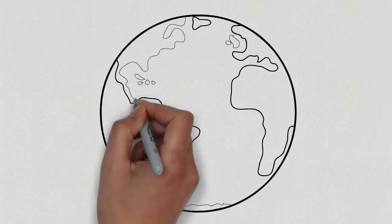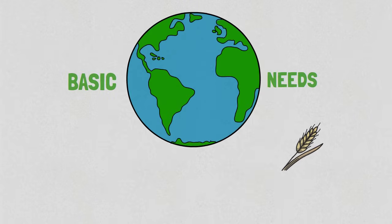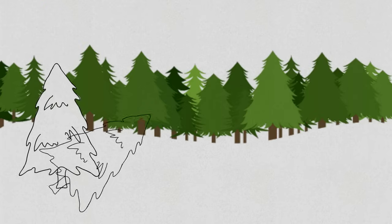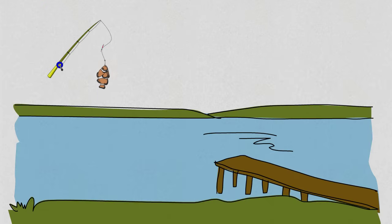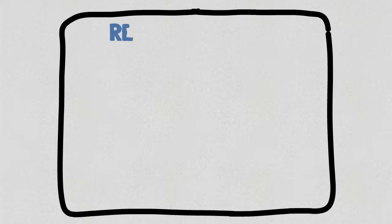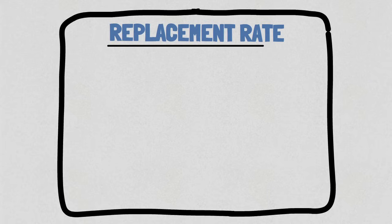Our planet has many resources that we depend on for food, for housing, and many of those resources can replenish. You can cut down a tree and grow new trees. You can catch fish and there will be more fish. But that only works if you do it at a rate that these systems can replenish. We call that the replacement rate.